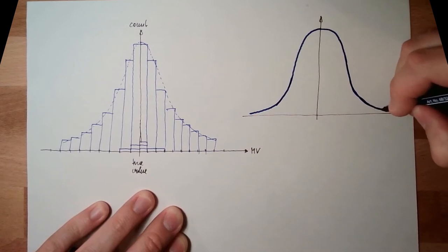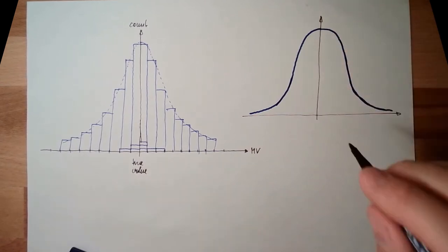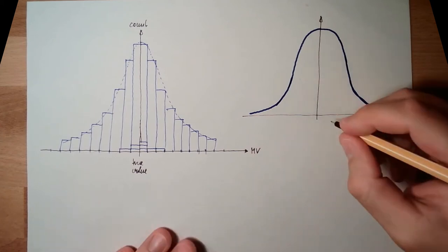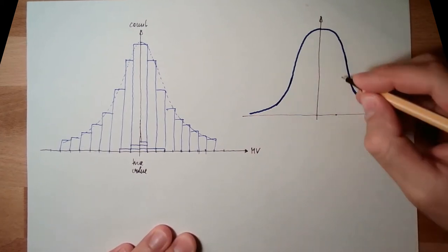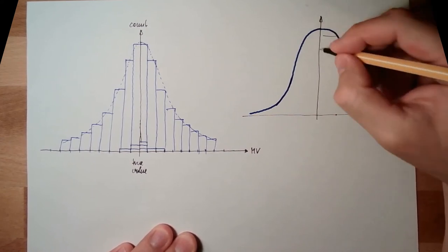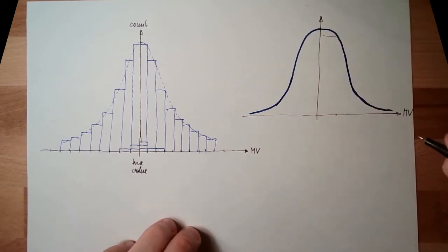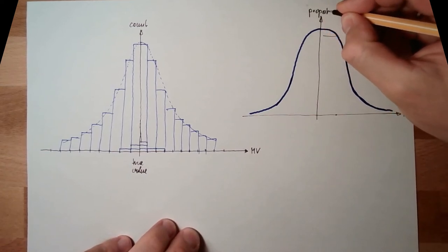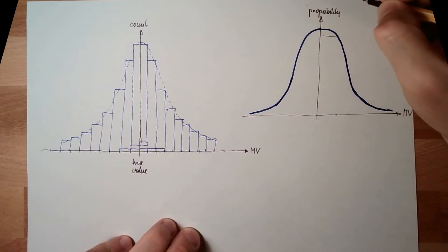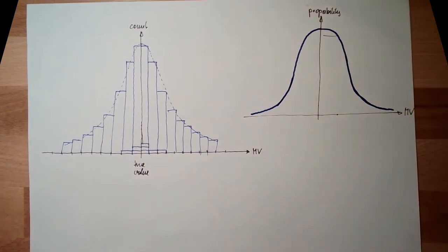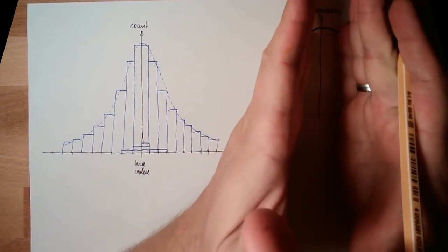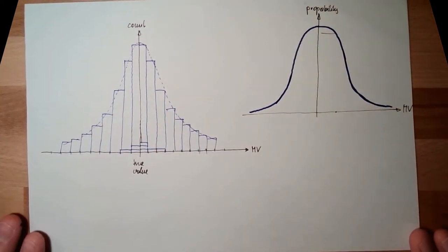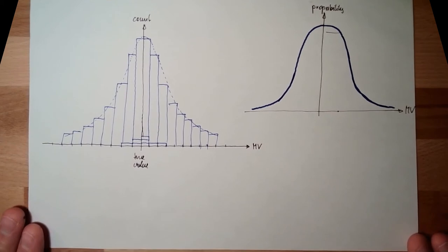And this gives how probable it is to reach, let's say, this value. It's that probable. So this is now a probable measured value, and this is the probability. We can see here in the middle, it's very probable. The further I go outside, the less probable it is.